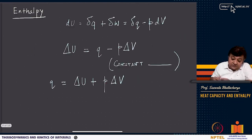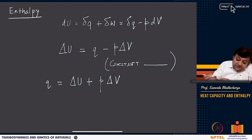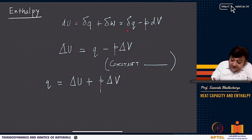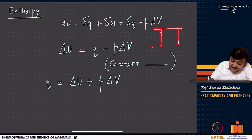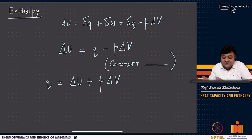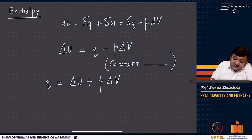Enthalpy h = u + pv is required because from the first law for a closed system, du = delta q + delta w = delta q minus p dv. At constant pressure, when compressing a gas with a piston, dv is negative and work done on the system is positive, so we put a minus sign. Thus du = delta q minus p dv.